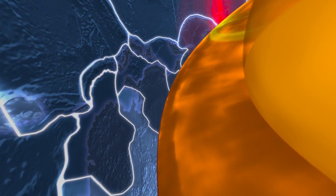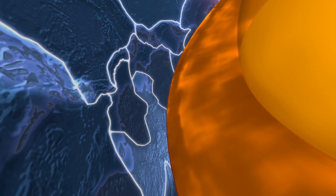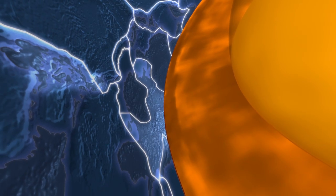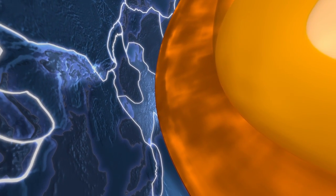Warmed by decaying atoms, our planet generates heat that softens the mantle rock, allowing it to flow slowly.